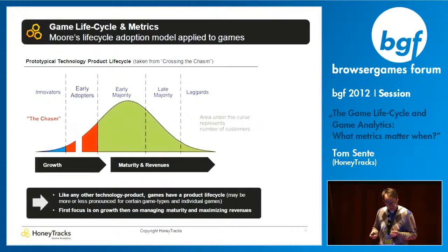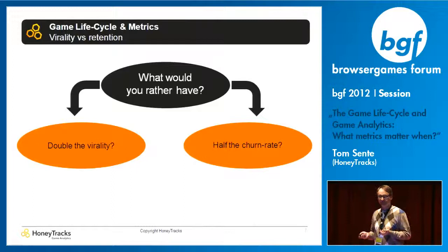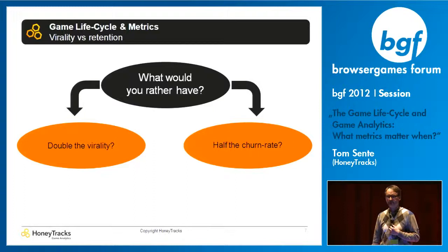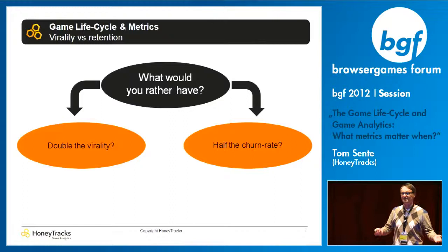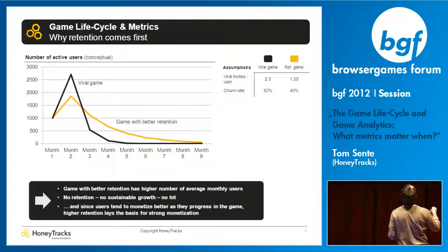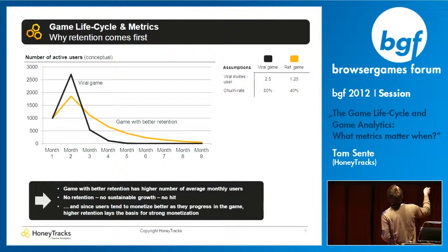If you could choose between double the virality or half the churn rate, who would go for double the virality? And who would go for half the churn rate? Those choosing half the churn rate are the winners. Looking at this simplified model, the black line shows double virality and the orange one shows less invites but a much better churn rate — which is of course the complement to retention. Churn plus retention equals 100%.